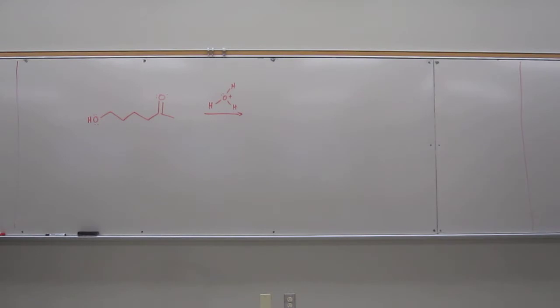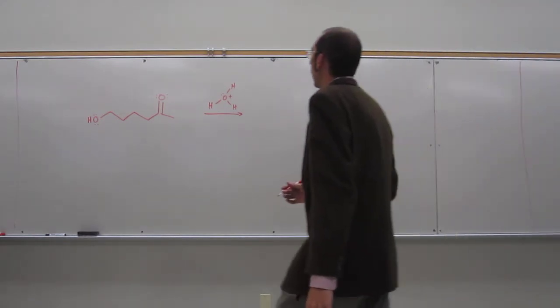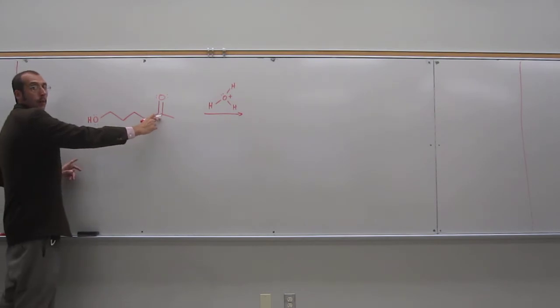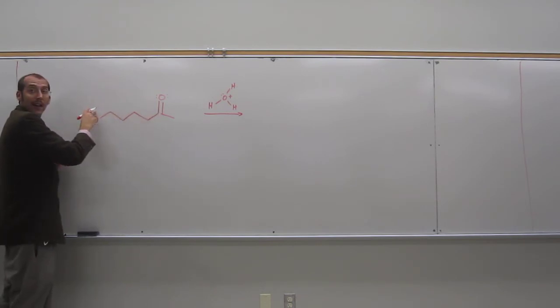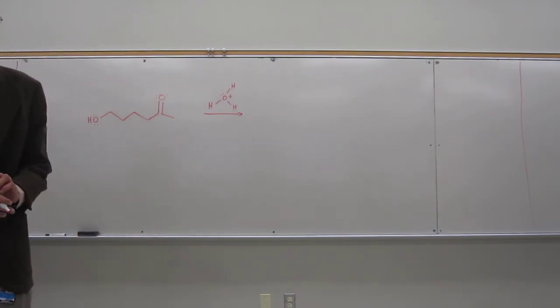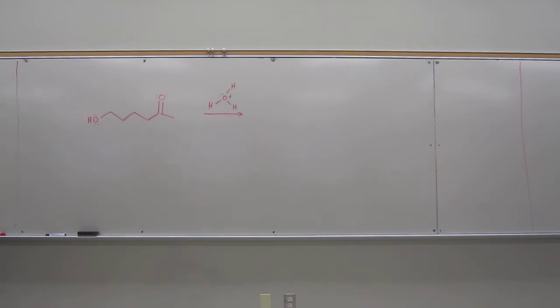I want you guys to always remember that. What you'll see is that you've got either a carbonyl carbon and an oxygen, an alcohol oxygen, either one, two, three, four, five, six atoms away from each other, or five atoms away from each other. This one actually is going to make a six-membered ring. Very stable five and six-membered rings.